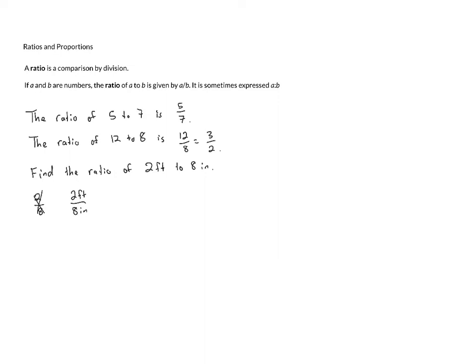So here we've got feet and inches, and we know that 1 foot is 12 inches. So we can convert this from feet to inches. If 1 foot is 12 inches, then 2 feet has to be 24 inches, 12 times 2. So this is the same as 24 inches, and so this becomes 24 inches over 8 inches.